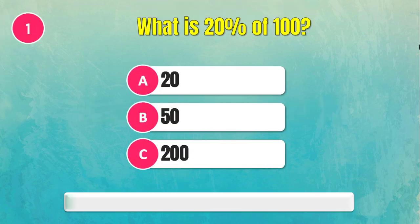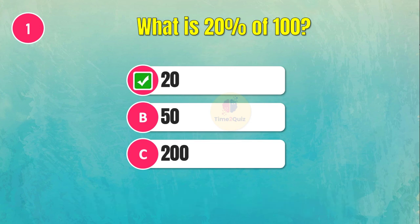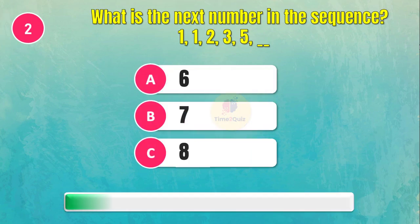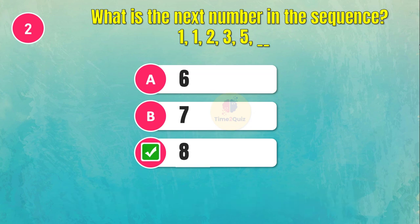First question: What is 20% of 100? The answer is 20. Question number two: What is the next number in the sequence? The answer is 8.